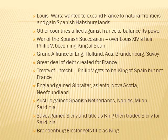England gains Gibraltar and the Asiento, which is the agreement allowing it to sell slaves and some other goods in the Spanish colonies. They get Nova Scotia and Newfoundland. Austria gets the Spanish Netherlands, henceforth called the Austrian Netherlands, and also gets Naples, Milan, and Sardinia. Savoy gains Sicily and its ruler is called a King, then trades Sicily for Sardinia.